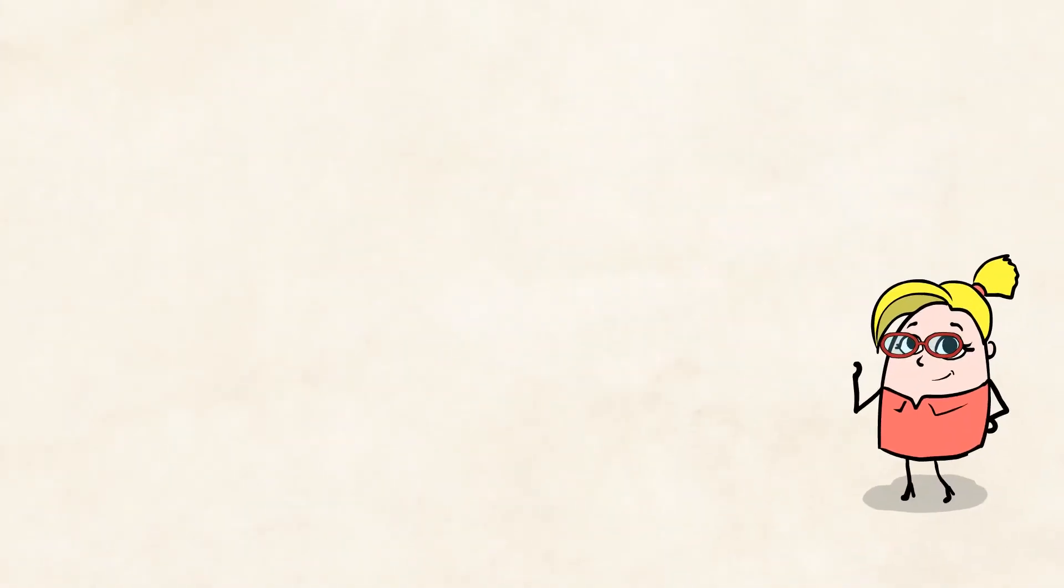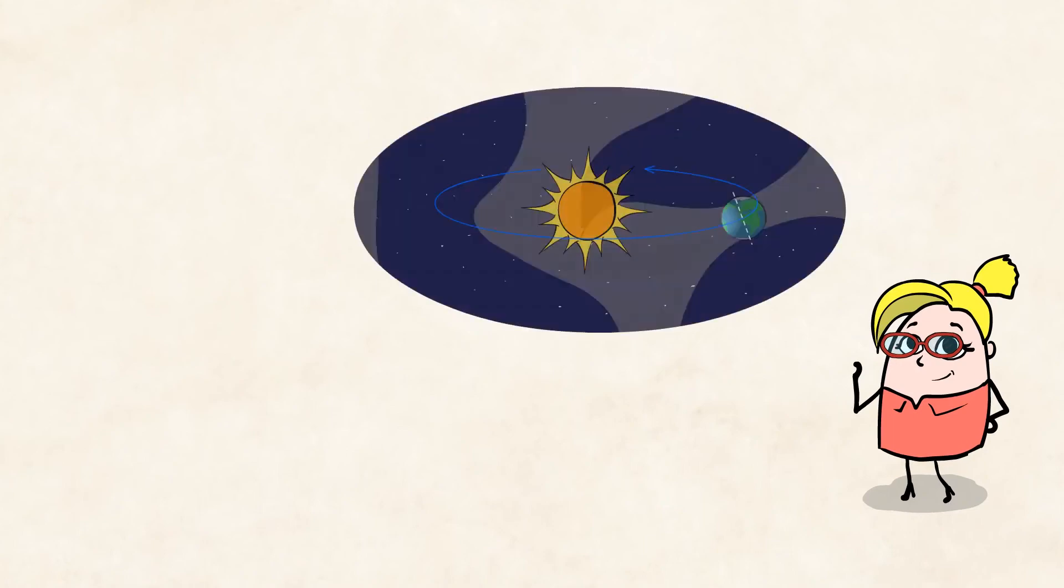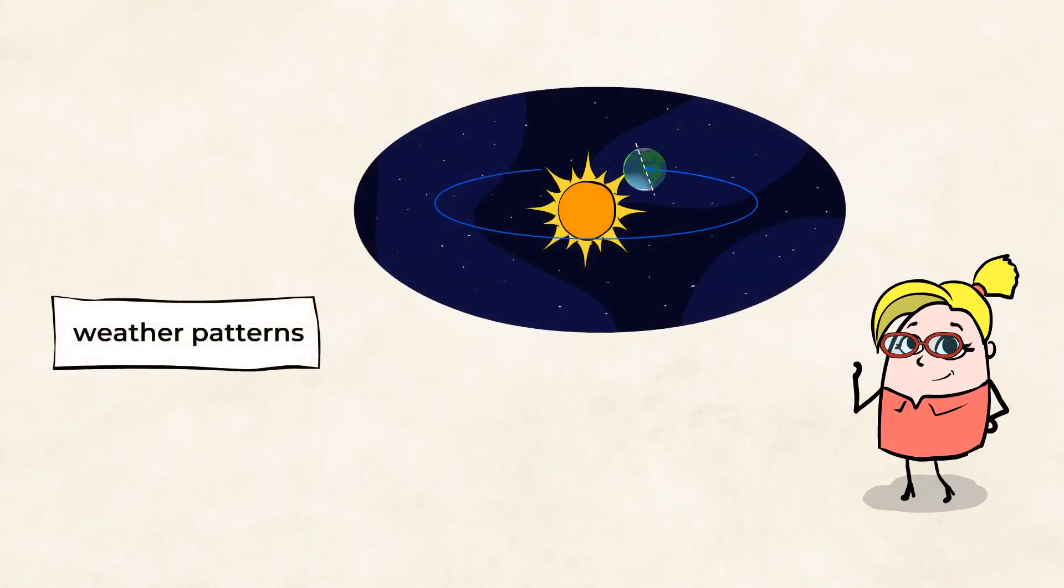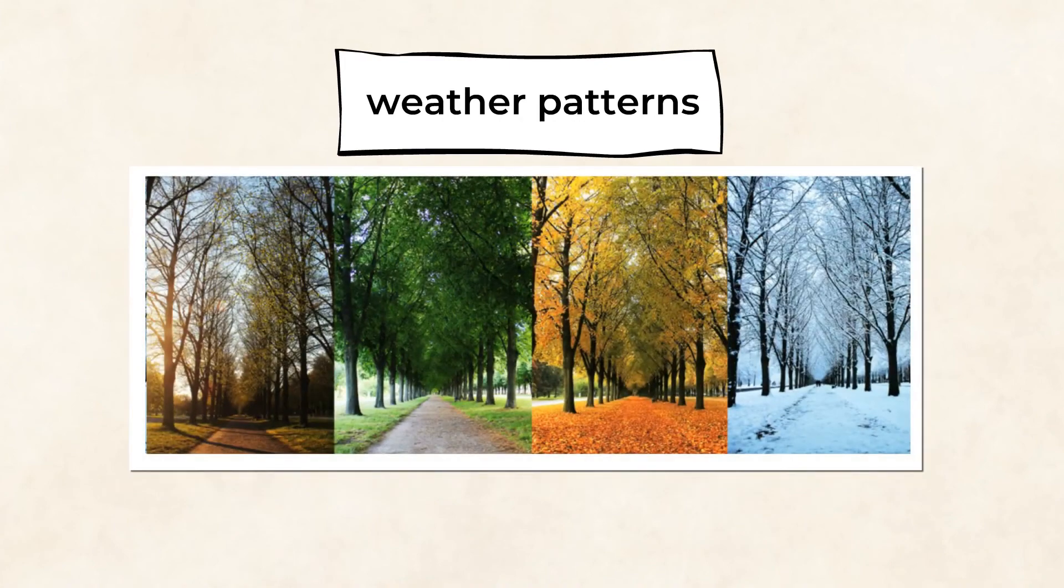Wow. We've learned some amazing things about the sunlight and the patterns of the Earth. Now we know that the orbit of Earth around the sun, along with the tilted rotation of the planet, creates the seasons year after year.